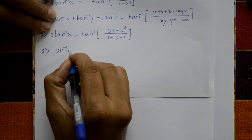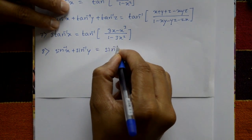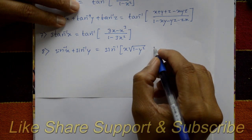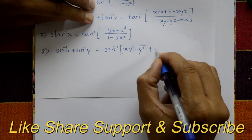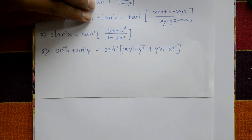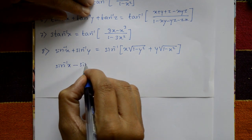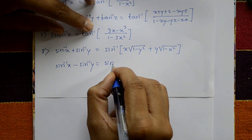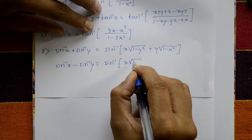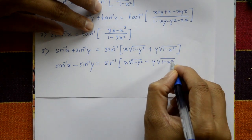The eighth one: sin inverse x plus sin inverse y is equal to sin inverse of x into square root of 1 minus y square, plus y into square root of 1 minus x square. Similarly, sin inverse x minus sin inverse y is equal to sin inverse of x into square root of 1 minus y square, minus y into square root of 1 minus x square.